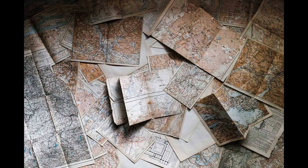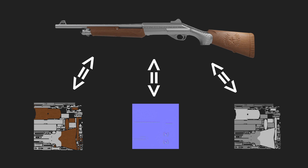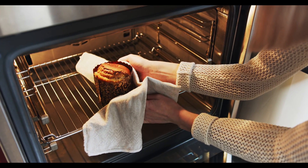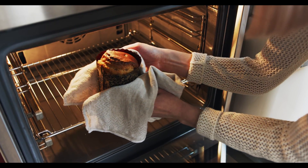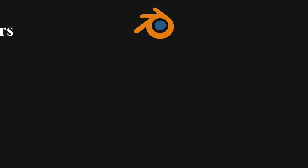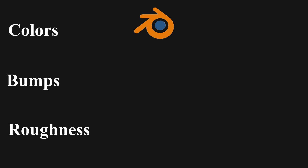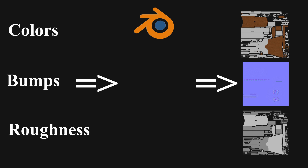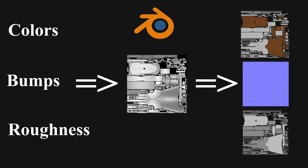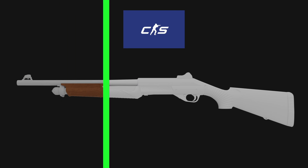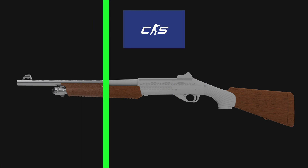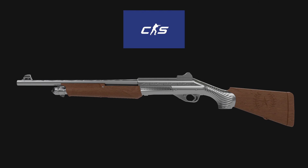But first let's talk about maps, what they are and why we need them. UV maps are a 2D representation of the 3D model and its textures. The act of creating these maps is called baking. When we bake, Blender takes the colors, the bumps, the roughness and other properties of the materials of the model and creates images of these properties according to the UV sheet of the model. Then the game takes these images and applies them to the weapon in the game, and that's how we get to see the skin.